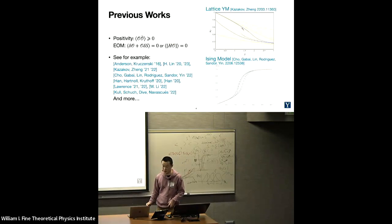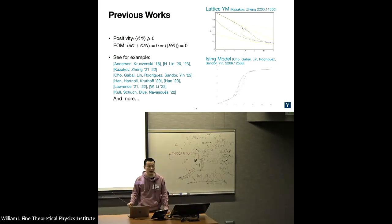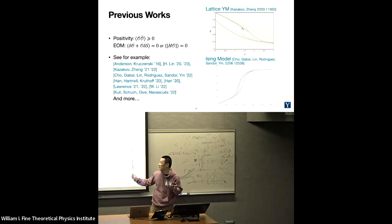Out of this method that I just explained, people in the community in the past number of years have done many different pioneering works. Many of these works are done by the audience or people in this collaboration. We have Anderson and Kutensky, and also follow up by Kazagov and John in bootstrapping the lattice Yang-Mills theory in two, three, and four dimensions. They consider the Wilson loop operators expectation values and the equation of motion, the loop equations of Yang-Mills, and using these they can put a bound on the expectation value of any Wilson loops.